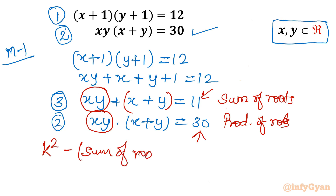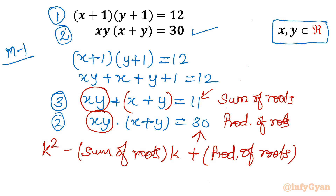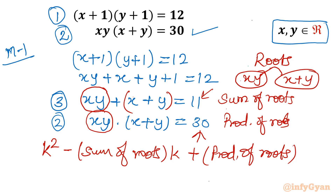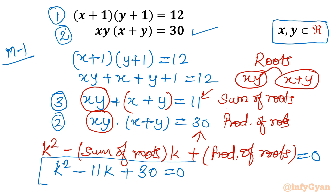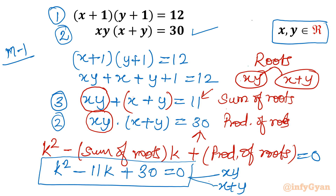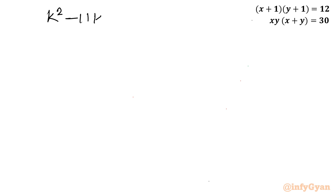We know the standard form: k² − (sum of roots)·k + (product of roots) = 0, where the roots of this quadratic are xy and (x+y). So let me frame this equation: k² − 11k + 30 = 0. This is one quadratic equation whose roots are xy and x+y. We will solve this quadratic equation and equate both roots to xy and x+y respectively.